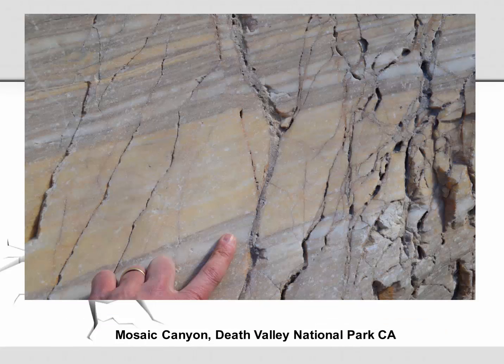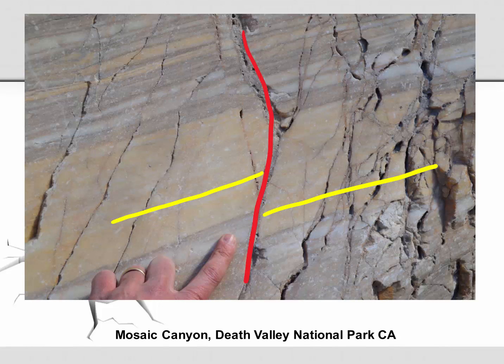Going from a large scale to a rather small scale, in Mosaic Canyon in Death Valley National Park, California, we can see this small layer was offset. The fault is indicated in red, and these yellow layers are offset with a little bit of overlap. This indicates that this was a reverse fault caused from compression or convergent motion.